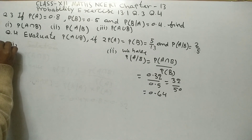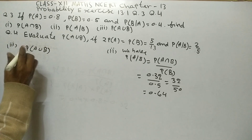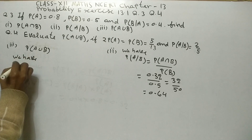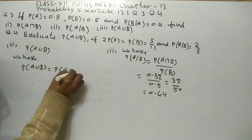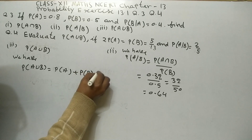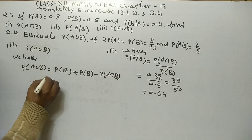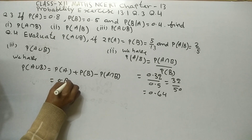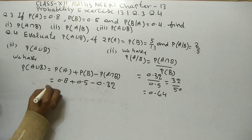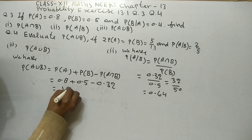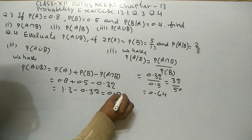Now, third part: probability of A union B equals probability of A plus probability of B minus probability of A intersection B, equal 0.8 plus 0.5 minus 0.32, equal 1.3 minus 0.32, equal 0.98.